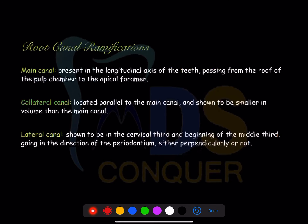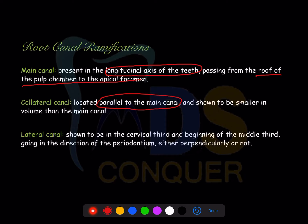Root canal ramifications include several types. The main canal runs along the longitudinal axis of the tooth from the roof of the pulp chamber to the apical foramen. The collateral canal runs parallel to the main canal but is smaller in size. The lateral canal can be perpendicular or angulated — not in the direction of the main canal — and is seen in the cervical or middle third, directing towards the periodontium.